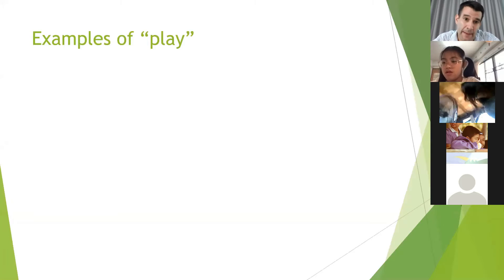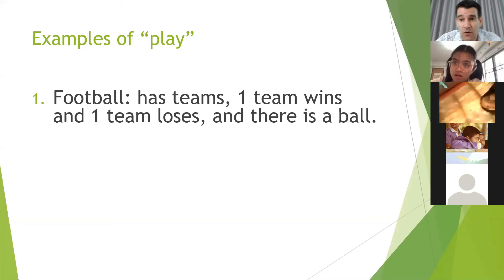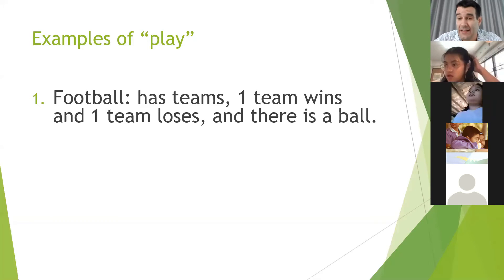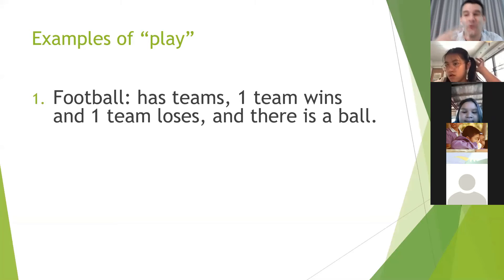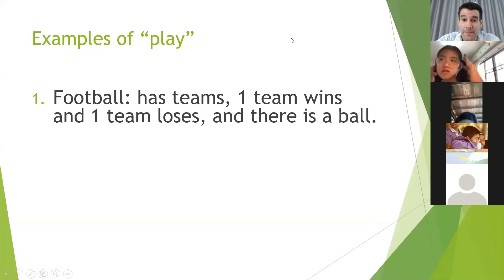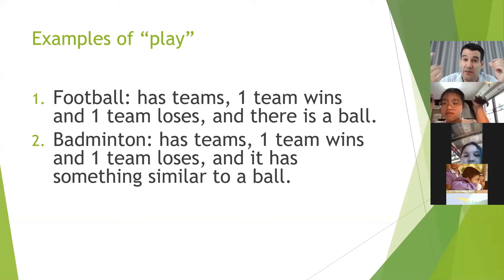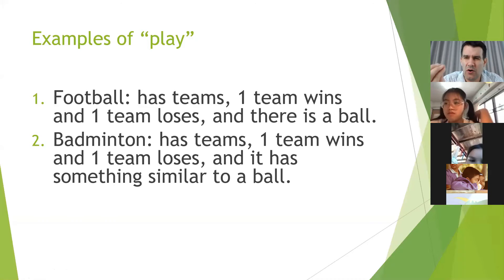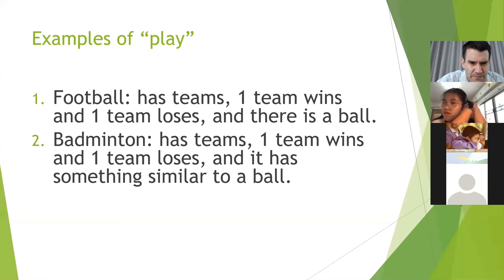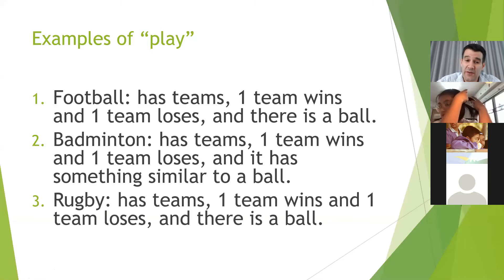So now I will go through some examples to show you how to use a sentence for games that use the verb 'play.' Football — you say 'I play football,' 'we play football,' 'you play football.' Why? Because football has teams. We have two teams to play each other, one team will win and one will lose. And there is a ball — obviously football will have a ball. Another example is badminton — badminton has two teams, one team will win, one team will lose. It does not have a ball, but it is similar to one. And rugby also has teams, a winner and loser, and there is a ball.